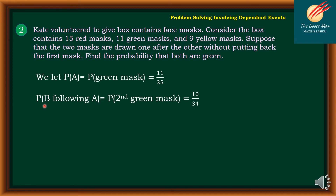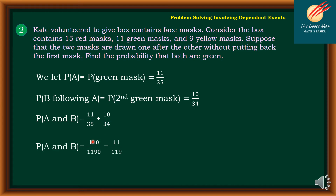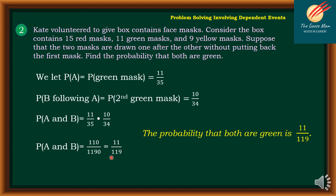The probability of B following A — drawing another green mask — is 10 over 34, because we subtract 1 from both the count of green masks (11 − 1 = 10) and the total (35 − 1 = 34). The probability of A and B is 11/35 × 10/34 = 110/1,190. In lowest terms, this is 11 over 190. Therefore, the probability that both are green is 11 over 190.